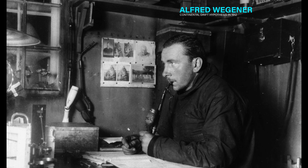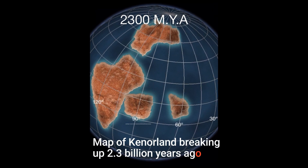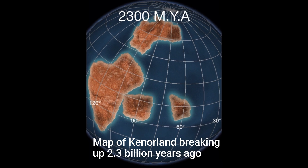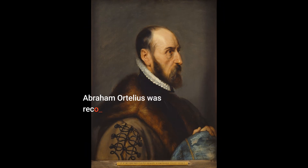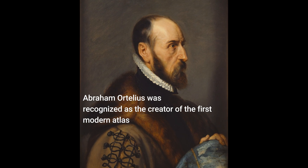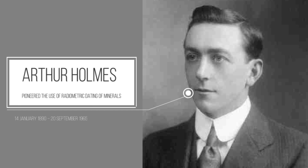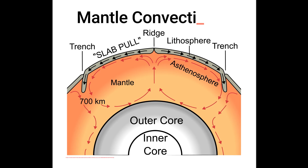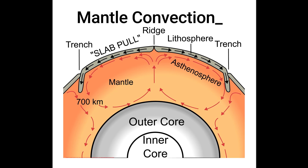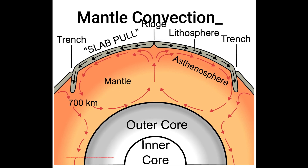Continental drift is the theory that the Earth's continents have migrated relative to one another throughout geologic time, giving the appearance of drifting across the ocean floor. Abraham Ortelius originally proposed the idea that continents could have drifted in 1596. Alfred Wegener expanded on the notion in 1912, but many dismissed his hypothesis. Arthur Holmes later established mantle convection. The theory of plate tectonics, which explains how continents move by riding on plates of the Earth's lithosphere, has subsequently supplanted the concept of continental drift.